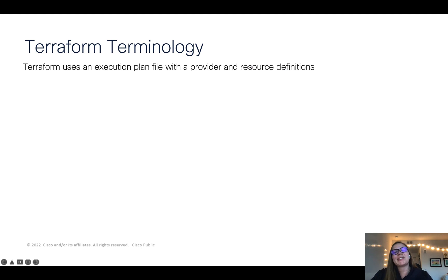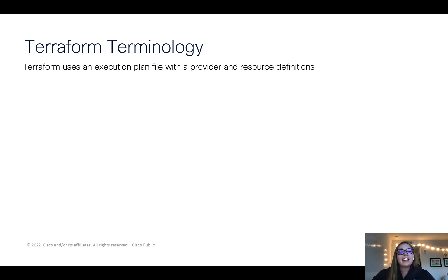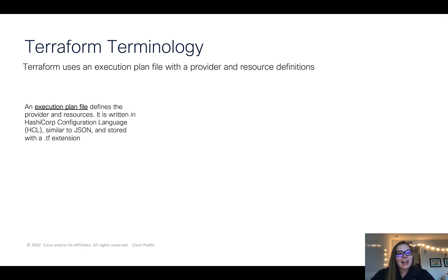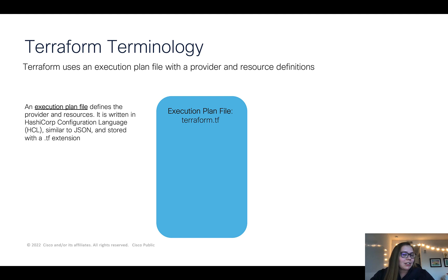Now let's cover some Terraform terminology. Terraform uses an execution plan file to describe the provider, resources, and essentially the desired state that we're looking for. The execution plan file is built in HCL, which is very similar to JSON, and it's stored with a .tf extension — for example, terraform.tf. Now let's take an example of what this could actually look like.